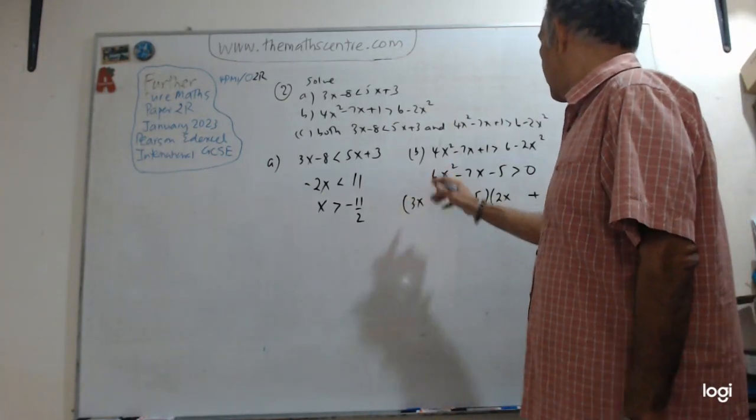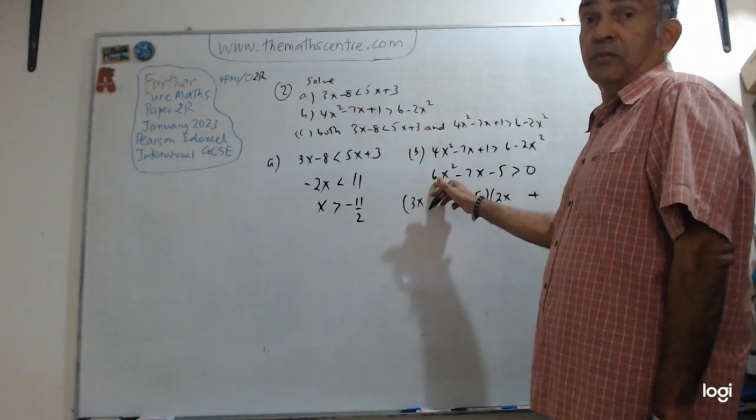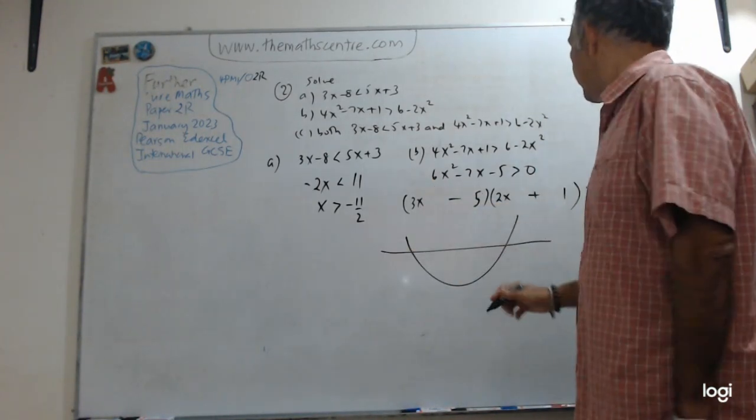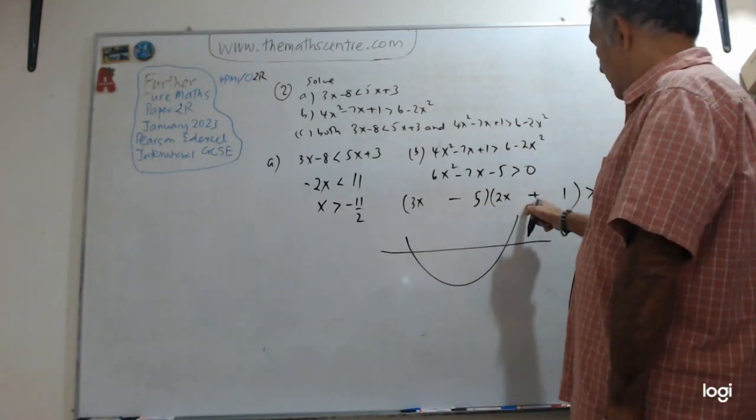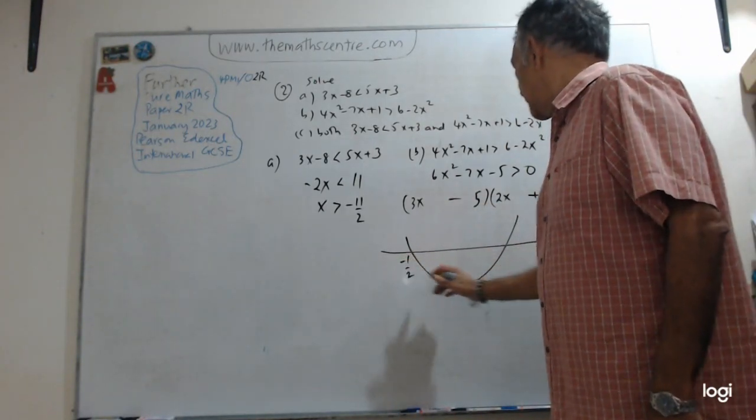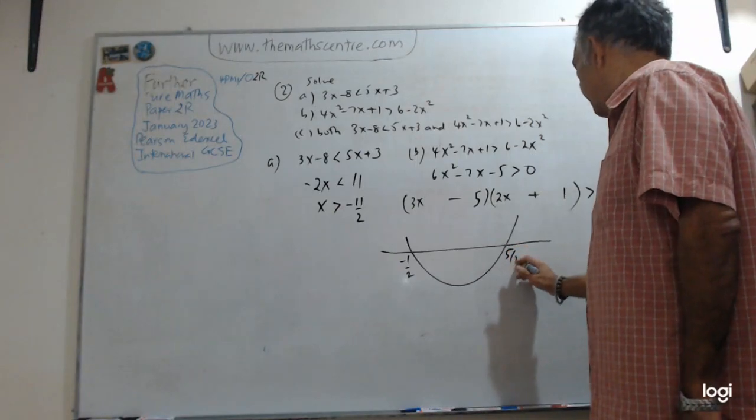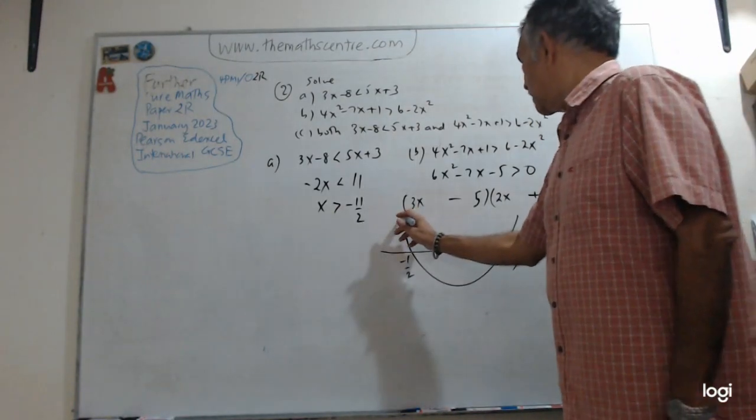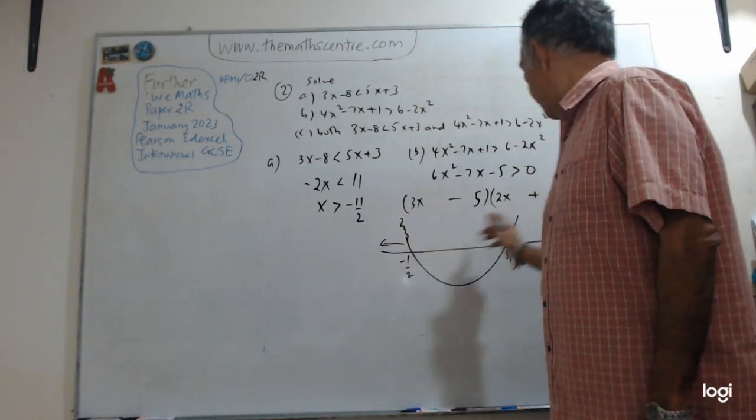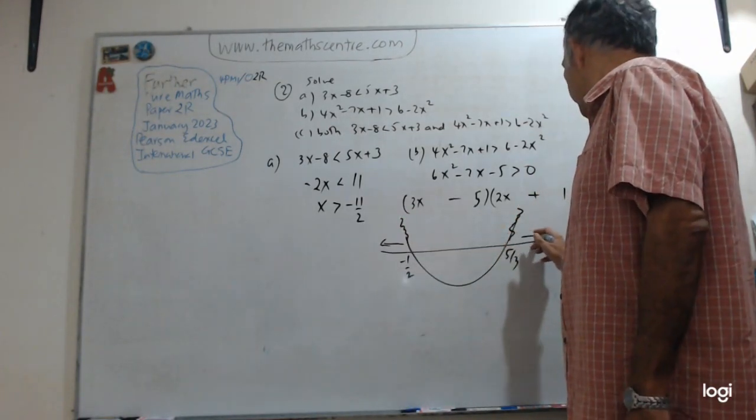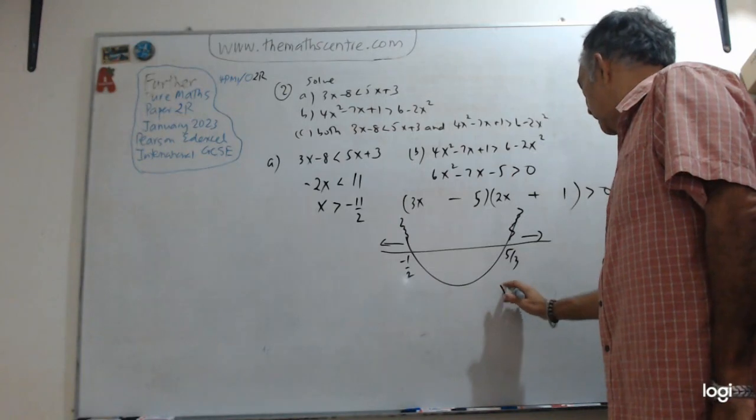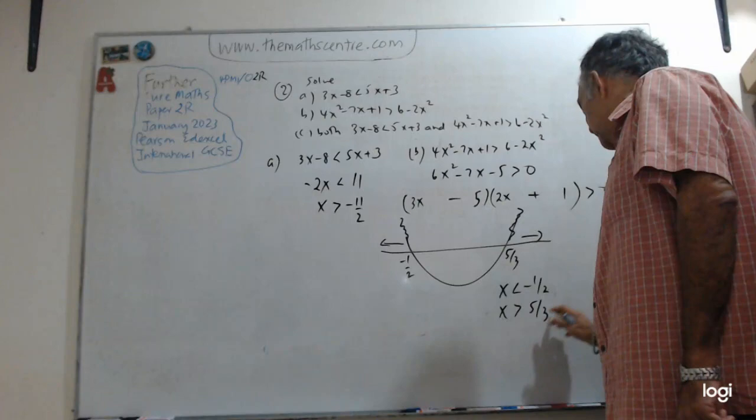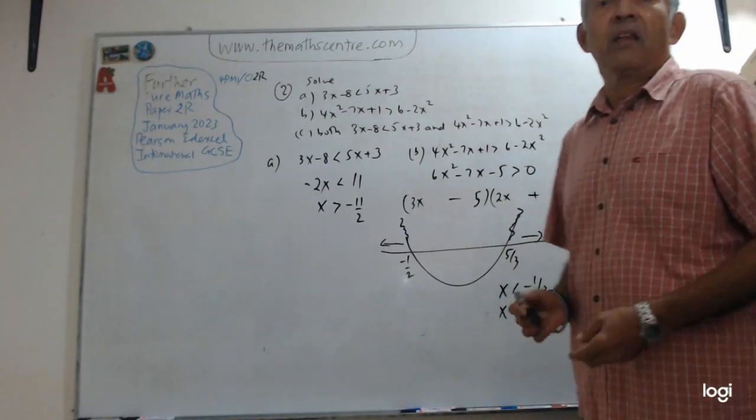Now I have, this is a curve with my A is positive. So I have this. Let me just plug in the values here. This is 5 over 3 and this is minus half. So let me put that here. This is bigger than 0, so I need this part. I need this part. So my answer is: X is less than negative half, X is bigger than 5 over 3. And we are done.